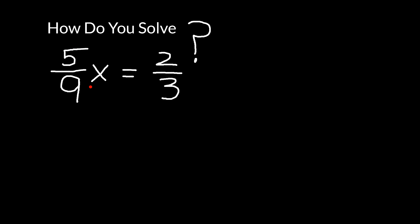If we think about it, five ninths is close to one half. So we're saying roughly that half of a number is equal to two thirds. Half of some number is equal to two thirds.